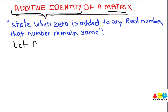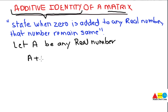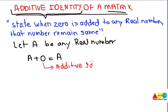Let's say A is any real number. To find the additive identity, you must add 0 to this real number and the answer must be the real number itself. It means that 0 is not impacting the real number in any case — so 0 is called the additive identity of that number.